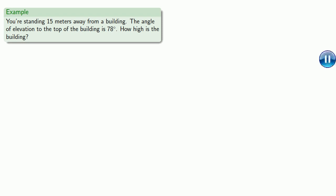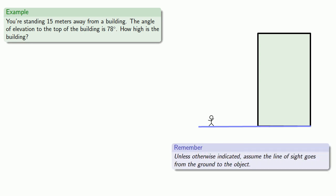So let's draw a picture. Remember, the angle of elevation is the angle that the line of sight makes with the horizontal. And a useful simplification is that, unless otherwise indicated, assume the line of sight goes from the ground to the object. Now we'll look for our right triangle. And if it's not written down, it didn't happen.